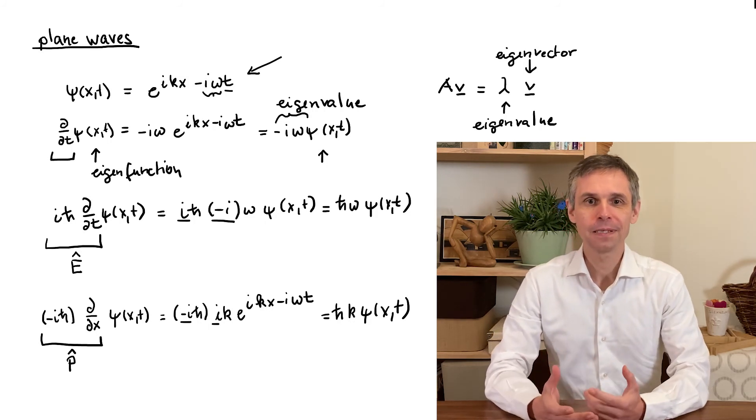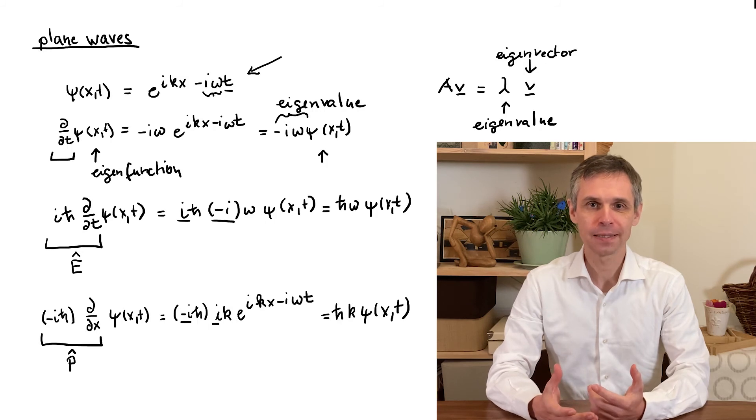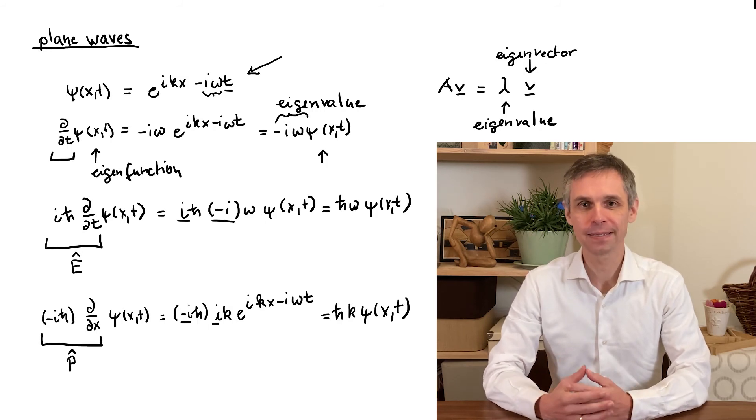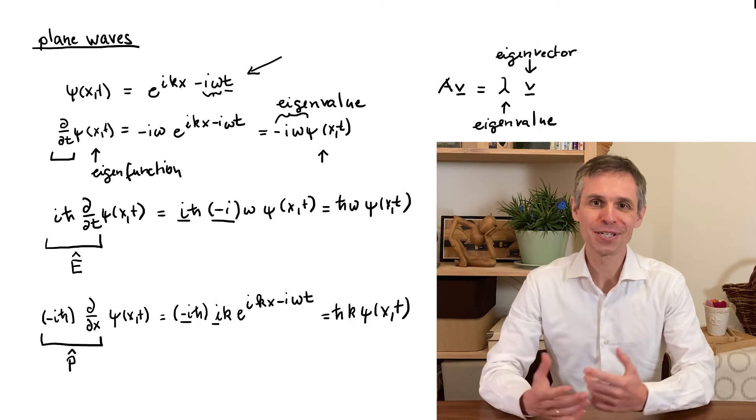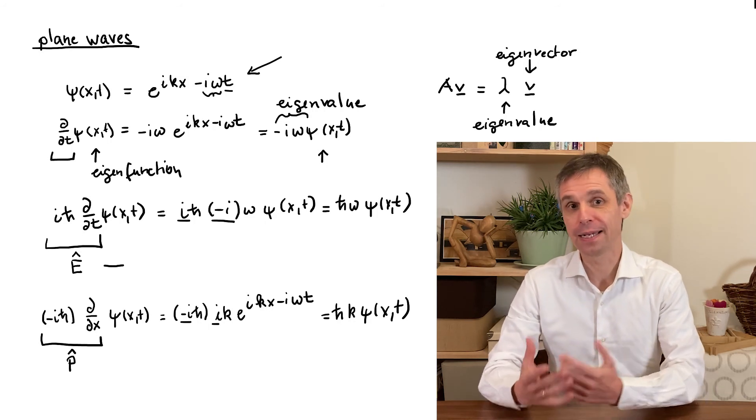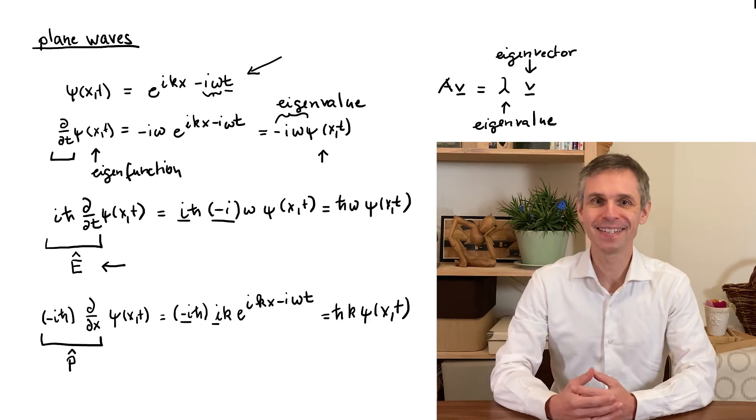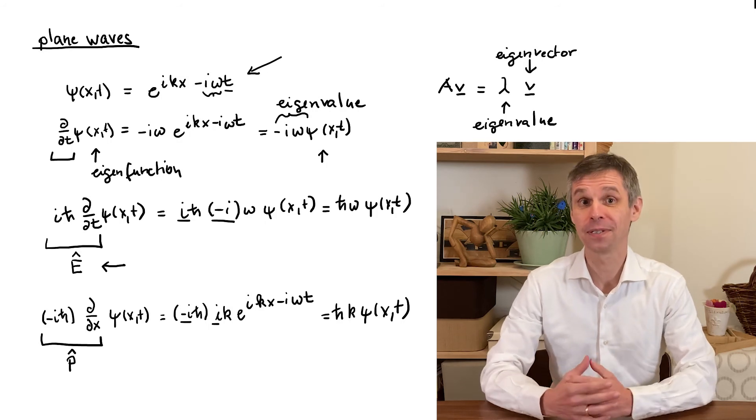In particular this plane wave we interpret as the wave function of a particle with a fixed energy and momentum and in order to see which energy and momentum this is we apply the energy operator and read off the energy as a constant that we then find in front of this function.